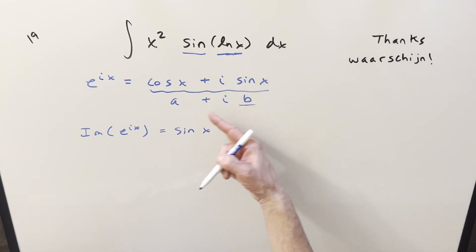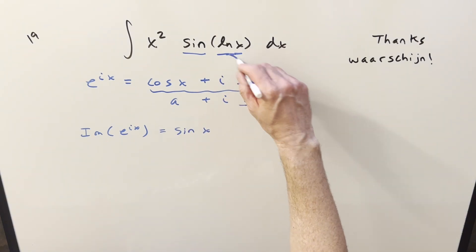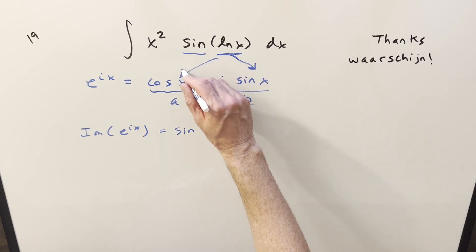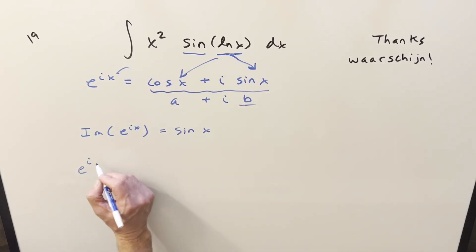Now, trying to use this on our problem, the input's not x, it's ln x. Well, that's no problem, as we can just input that everywhere. So we're looking at e to the i ln x. This is going to be the same thing as cosine ln x plus i sine ln x.